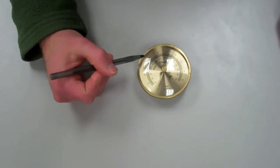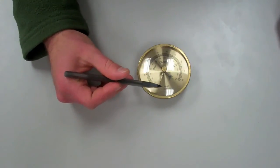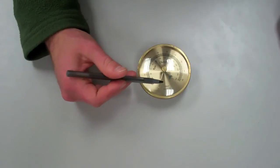The outside scale gives the pressure in millimeters of mercury, and the inside scale gives the pressure in millibars.